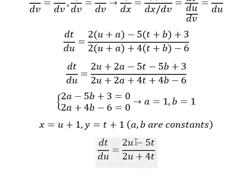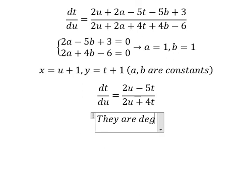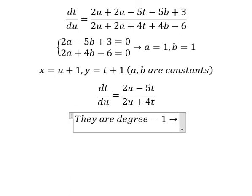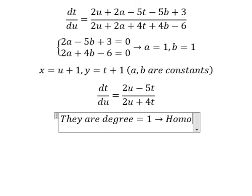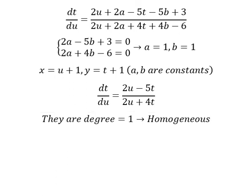Now we have u and t with degree number 1, so this is homogeneous. Now I will put t equal to z times u. So if I do first the differentiation for both sides, we have dt over du.